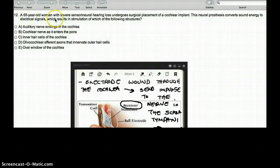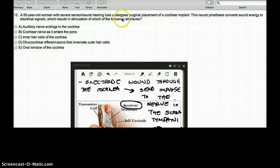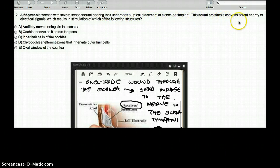So the question says, 65-year-old woman with severe sensorineural hearing loss undergoes surgical placement of a cochlear implant. The neural prosthesis converts the sound energy to electrical signals, results in stimulation of which of the following structures? A. Auditory nerve endings in the cochlea? Sure, that sounds like a viable answer.